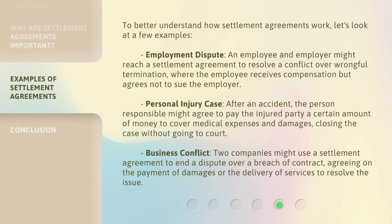To better understand how settlement agreements work, let's look at a few examples. Employment dispute: an employee and employer might reach a settlement agreement to resolve a conflict over wrongful termination, where the employee receives compensation but agrees not to sue the employer. Personal injury case: after an accident, the person responsible might agree to pay the injured party a certain amount of money to cover medical expenses and damages, closing the case without going to court. Business conflict: two companies might use a settlement agreement to end a dispute over a breach of contract, agreeing on the payment of damages or the delivery of services to resolve the issue.